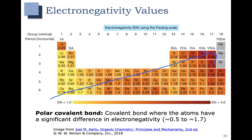Let's look at one more — a carbon-hydrogen bond. Carbon has an electronegativity value of 2.55 and hydrogen has a value of 2.20, giving a difference of 0.35. That's actually below the polar covalent range, so a carbon-hydrogen bond is not considered polar covalent. It is technically a non-polar covalent bond, although keep in mind there is a small difference and this will come into play later.